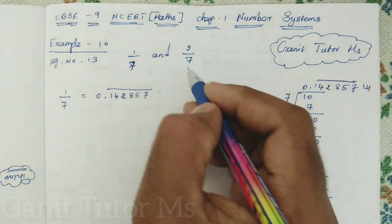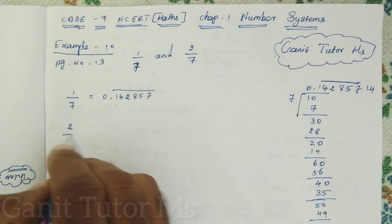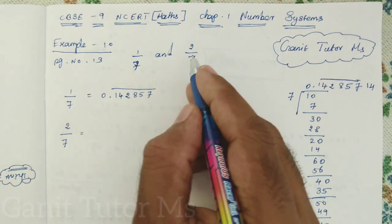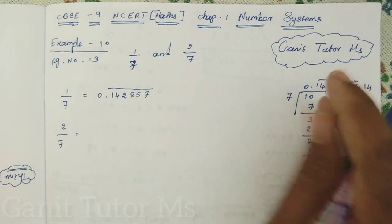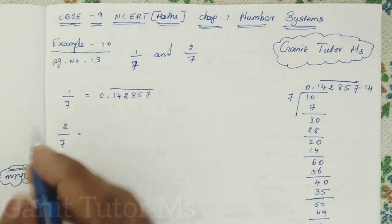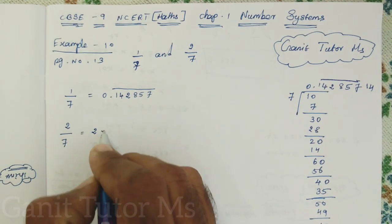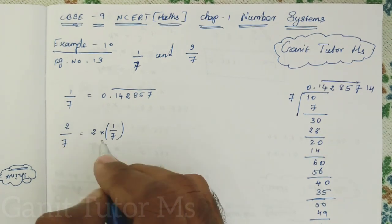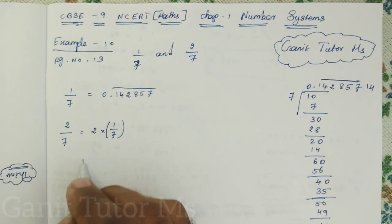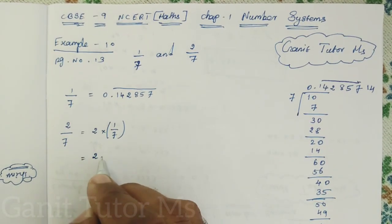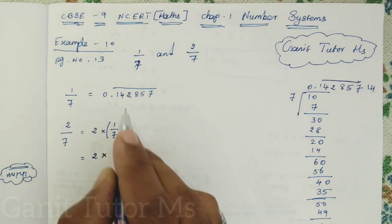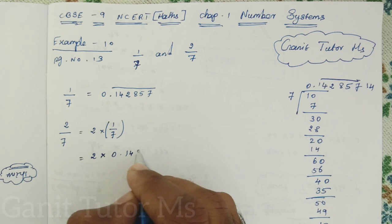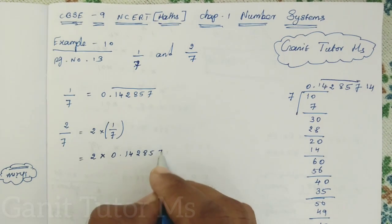Next you can find out 2 by 7, 2 divided by 7. Here it is 2 by 7. It means 2 divided by 7. You can go with the long division. Otherwise the better one - it can be written as 2 into 1 by 7. 2 by 7 you can write 2 into 1 by 7. Next, 2 we know that 1 by 7 value what it is? We find out now only here. What it is? 0 point 1 4 2 8 5 7.